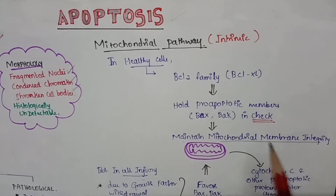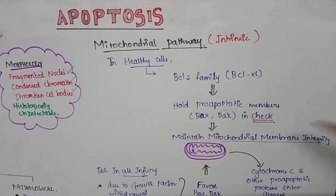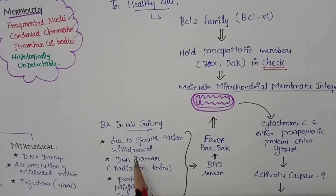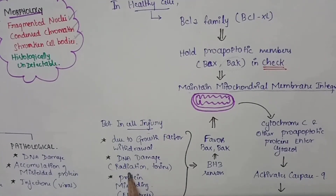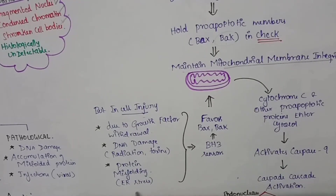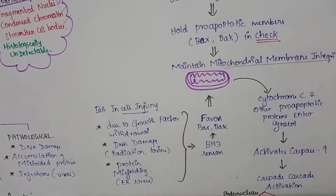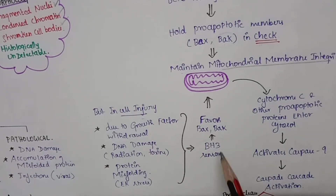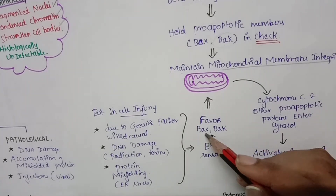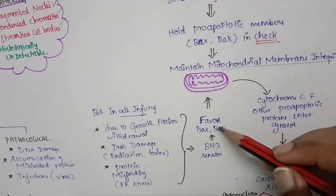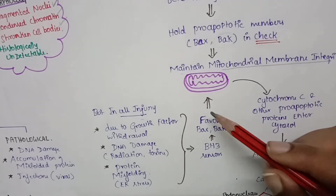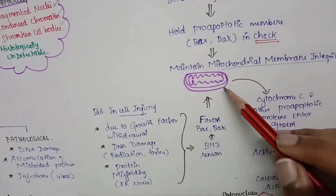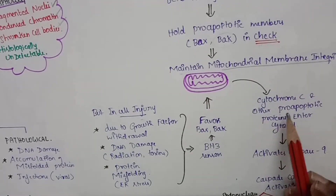This leads to maintenance of mitochondrial membrane integrity in healthy cells. But in cell injury — due to growth factor withdrawal, DNA damage due to radiation and toxins, and protein misfolding due to ER stress — there will be release of BH3 proteins. These BH3 proteins favor the BAX and BAK pro-apoptotic members, and hence mitochondrial membrane permeability increases.